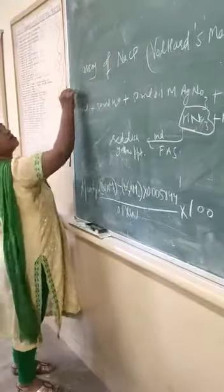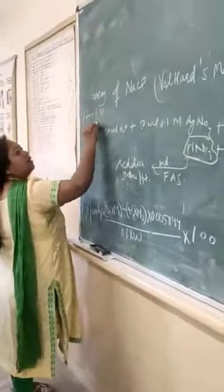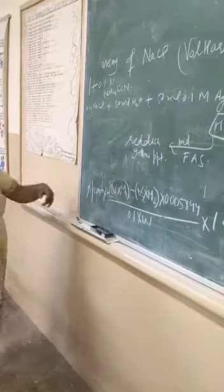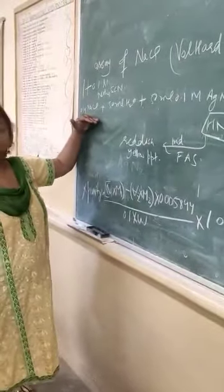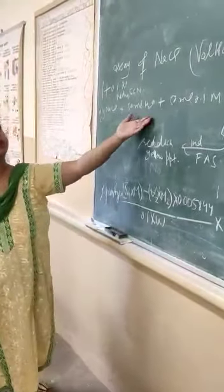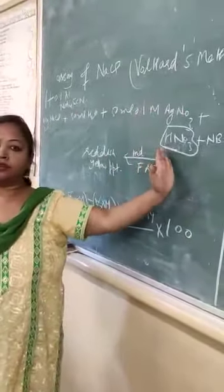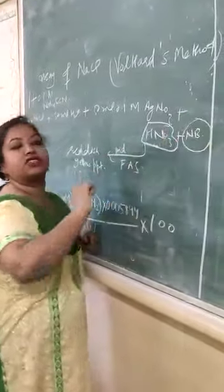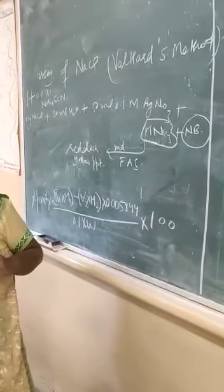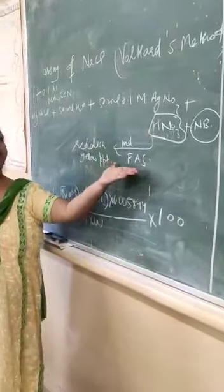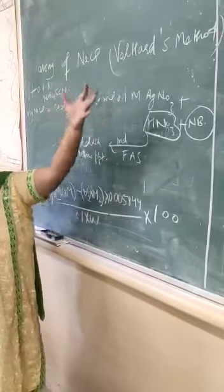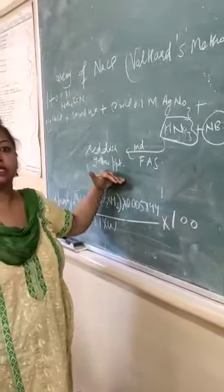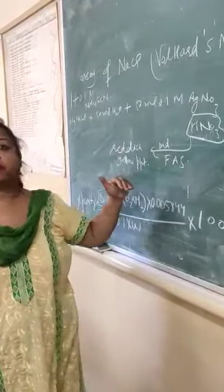We are taking Ammonium Thiocyanate in the burette. This is used for standardization of silver nitrate. Then in the conical flask we are taking Sodium Chloride, water, silver nitrate, nitric acid which gives the acidic medium, plus the most important component - Nitrobenzene. The indicator is ferric ammonium sulphate. All of them will react together to give reddish yellow precipitates, since these are precipitation titrations.